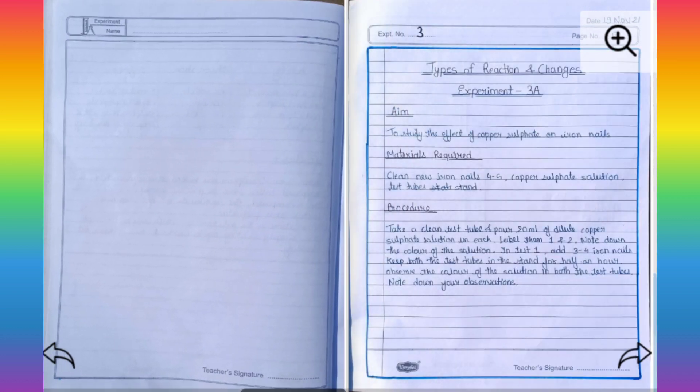From the next page, I write my third experiment. This experiment has also the same things like aim, material required, procedure, explanation, conclusion and precautions. And it has also some diagrams and tables.